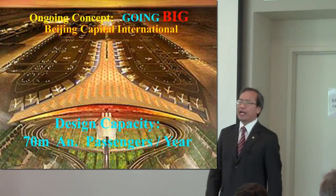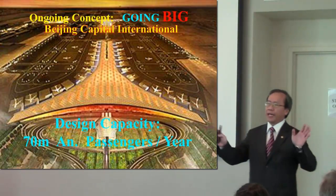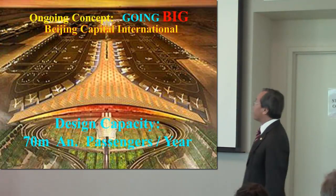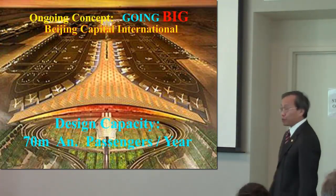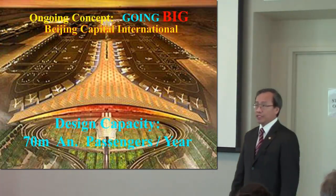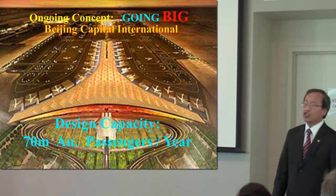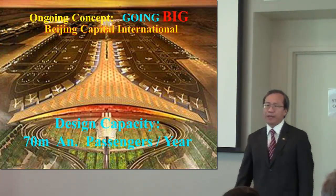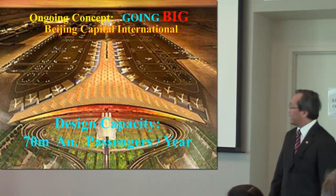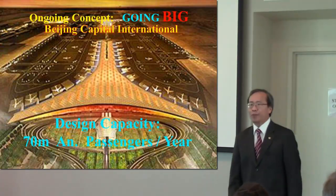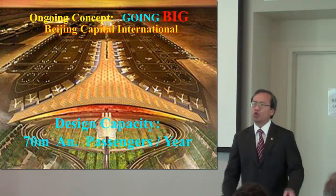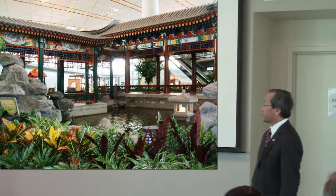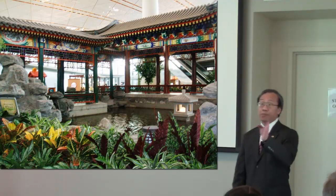The ongoing concept on airport terminals is going big. This is Beijing Capital International Airport. This terminal is called the Dragon Terminal. It's the world's second largest terminal with a design capacity of 70 million annual passengers — about 200,000 passengers a day. It has an imperial garden in it.